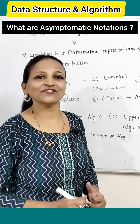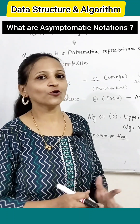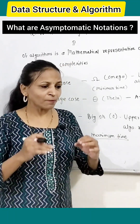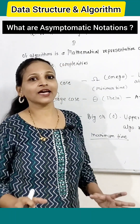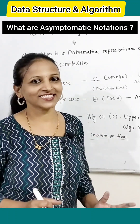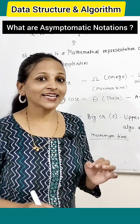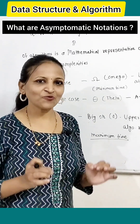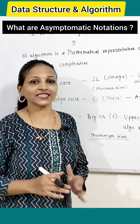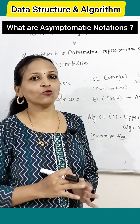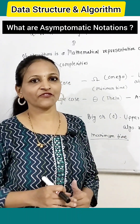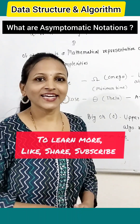The worst case time complexity can be represented with the help of big O notation. That is nothing but the maximum time taken by an algorithm for its execution. Worst case means it represents the upper bound of running time of an algorithm or space of an algorithm.